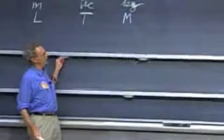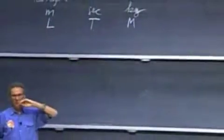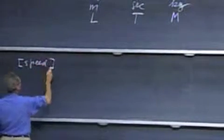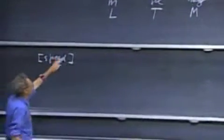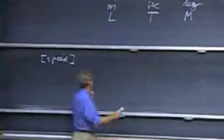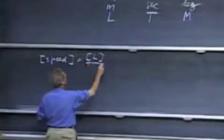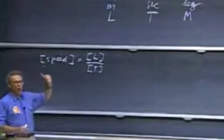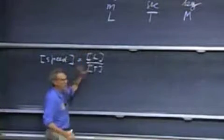All other quantities in physics can be derived from these fundamental quantities. I'll give you an example. I put a bracket around here. I say speed, and that means the dimensions of speed. The dimensions of speed is the dimension of length divided by the dimension of time. So I can write for that, bracket L divided by bracket T. Whether it's meters per second or inches per year, that's not what matters. It has the dimensions of length per time.